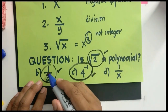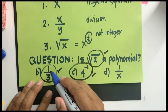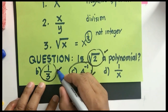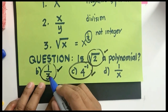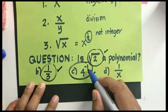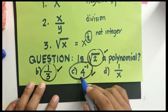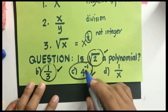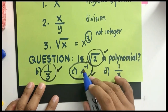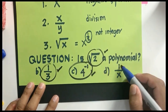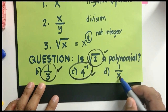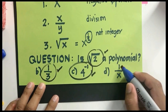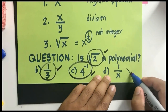Is 1/3 a polynomial? Yes, because 1/3 is a constant. What about 4 raised to negative 1? Even though it has a negative integer exponent, 4 raised to negative 1 is still a constant — not a variable — so it's a polynomial. However, 1 over x is not a polynomial because x is a variable and there is a division operation.